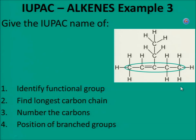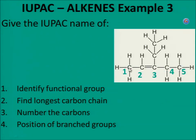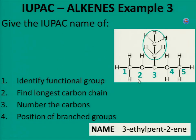Example 3. Give the IUPAC name of this molecule. Identify the functional group — there is a double bond, therefore it is an alkene. Find the longest carbon chain: 1, 2, 3, 4, 5 carbons. Number the carbons and identify the position of the double bond and the branch. There is a branch at carbon 3 with 2 carbons — therefore ethyl. There is a double bond at carbon 2 — therefore 2-ene. So the name is 3-ethylpent-2-ene.